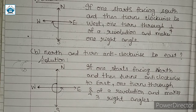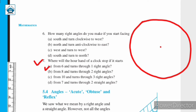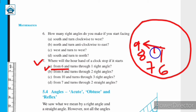Draw diagrams using scale and pencil only. Question number 7: Where will the hour hand of a clock stop if it starts from 6 and turns through one right angle? The hour hand starts from 6 and moves through one right angle, covering 1, 2, and 3 unit distances. So it will reach 9. When the hand finishes one right angle it will reach 9.